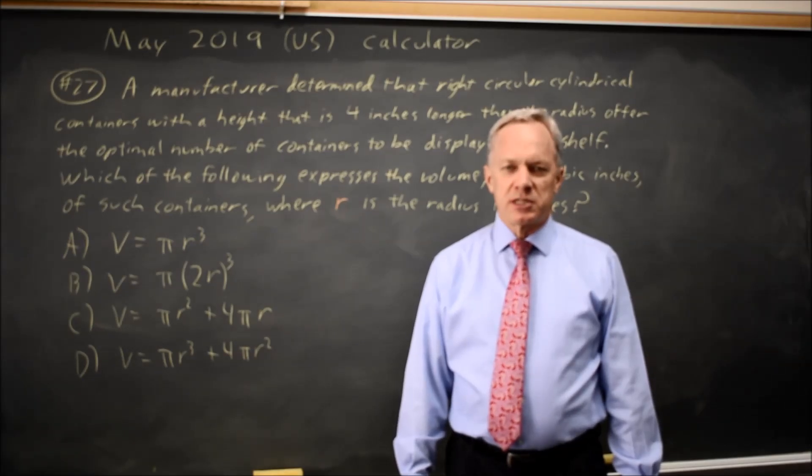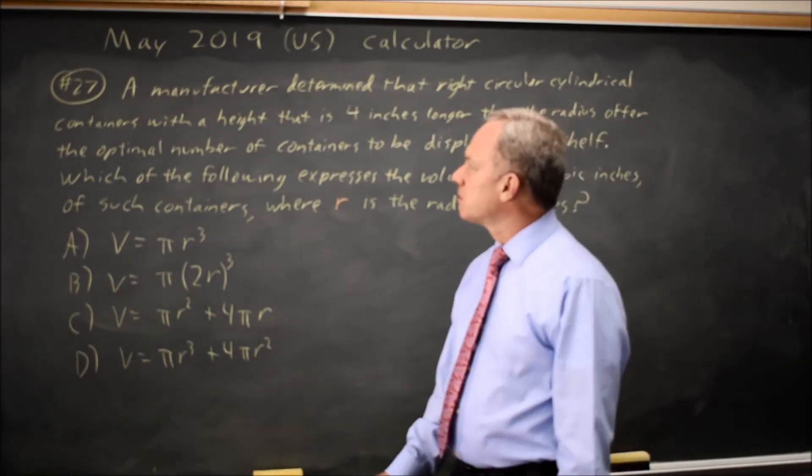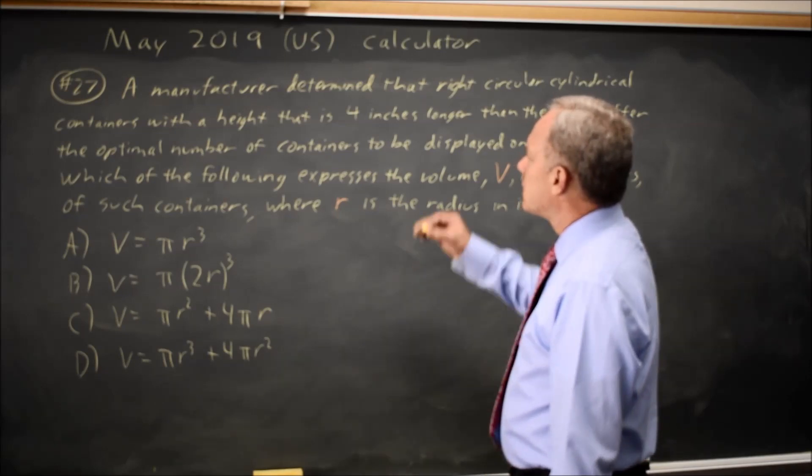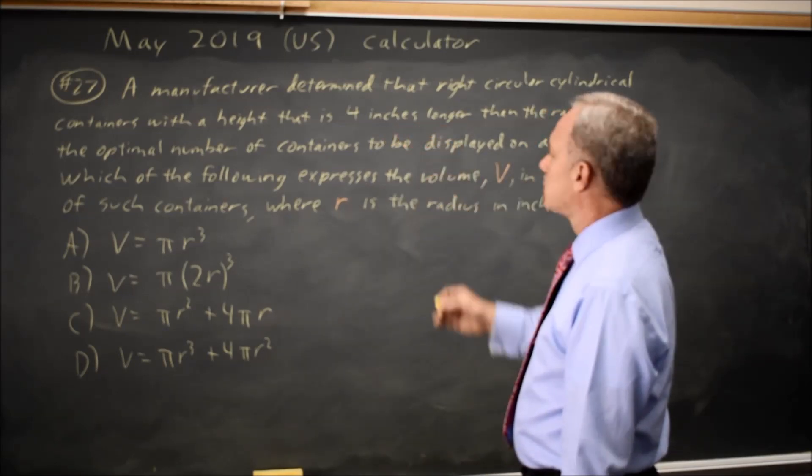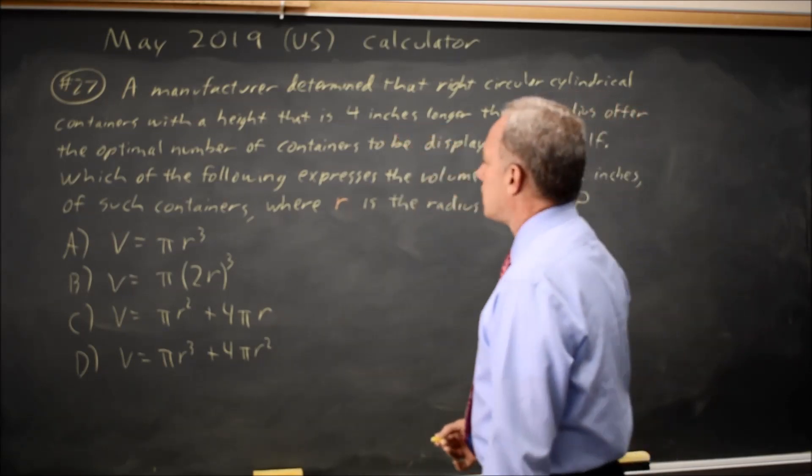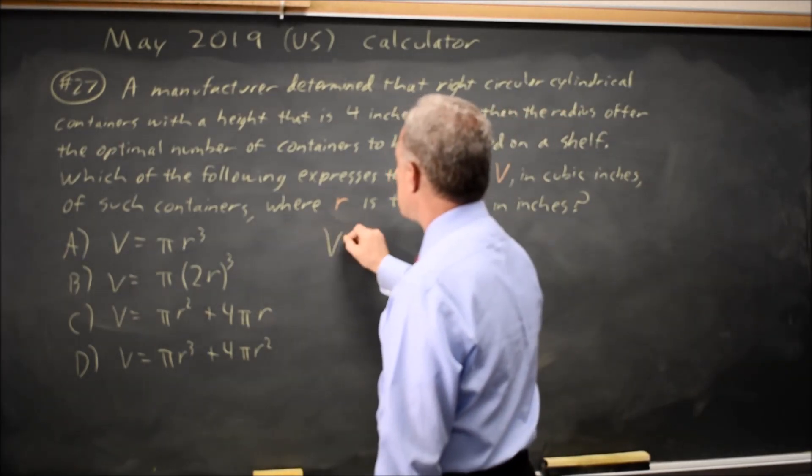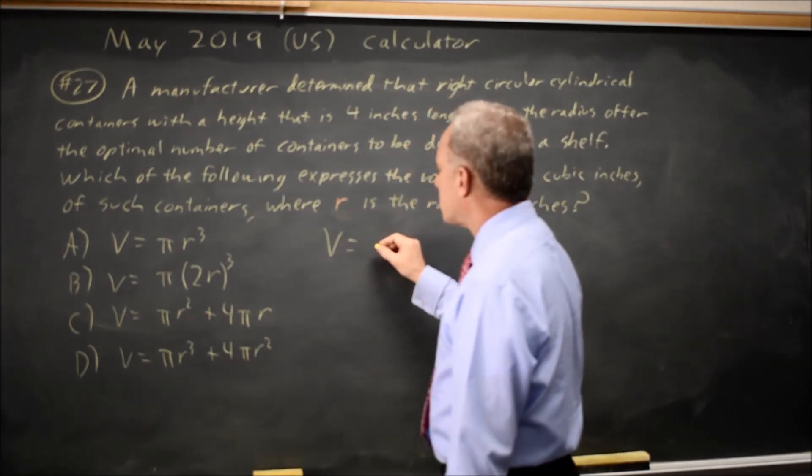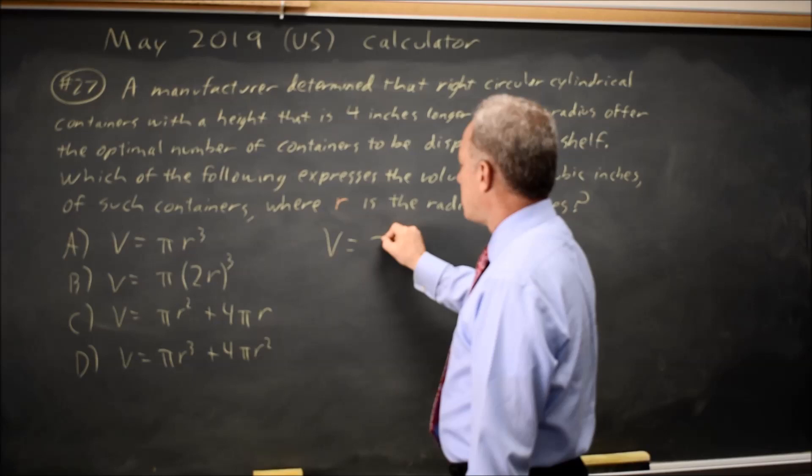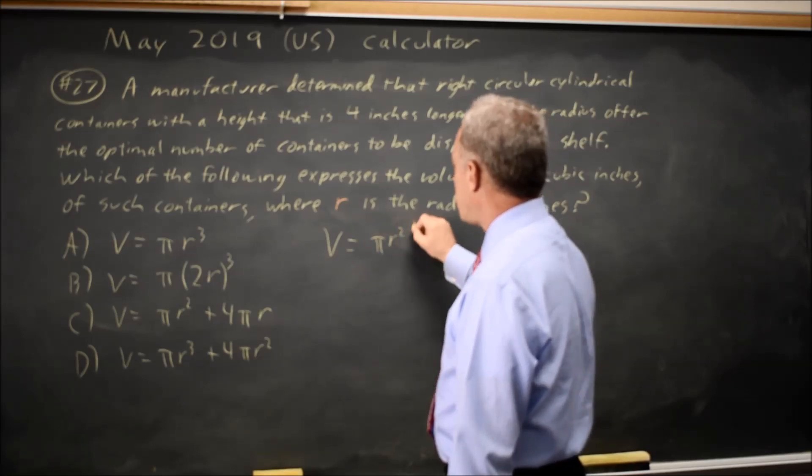This is calculator question number 27. College Board is asking about a right circular cylinder, and they say that the height is 4 inches longer than the radius, and the volume of a cylinder is given at the start of each math section as πr²h.